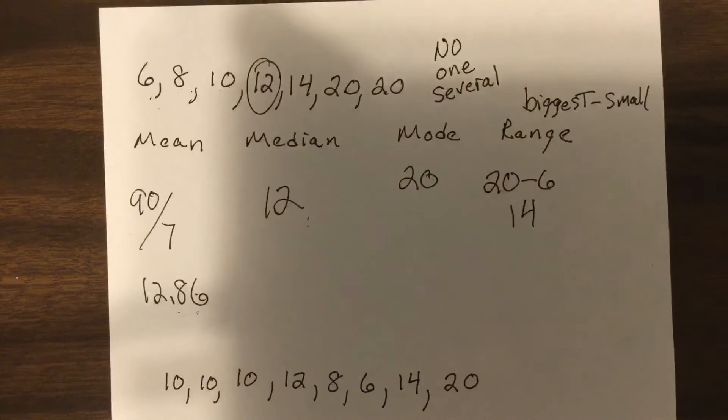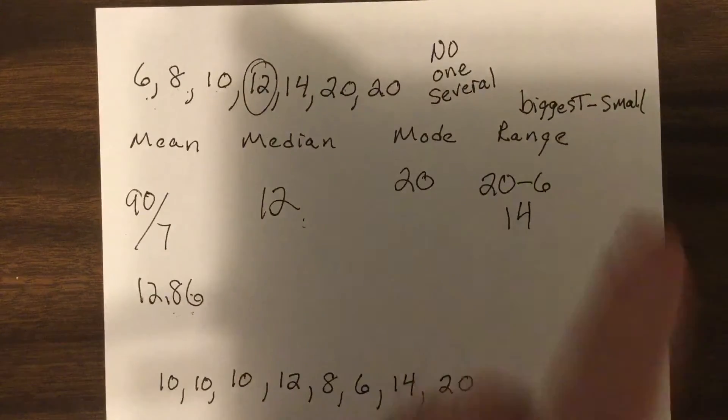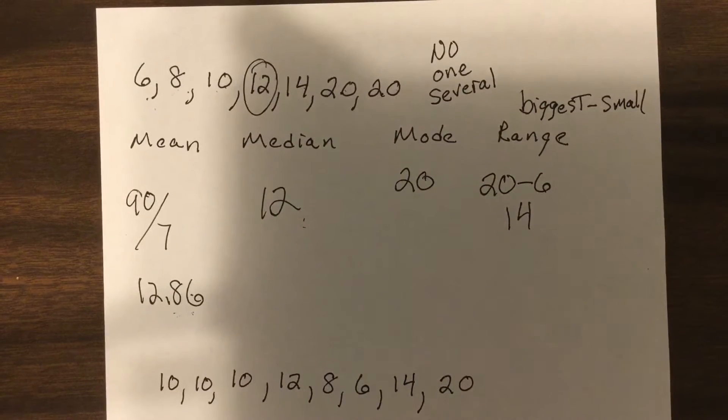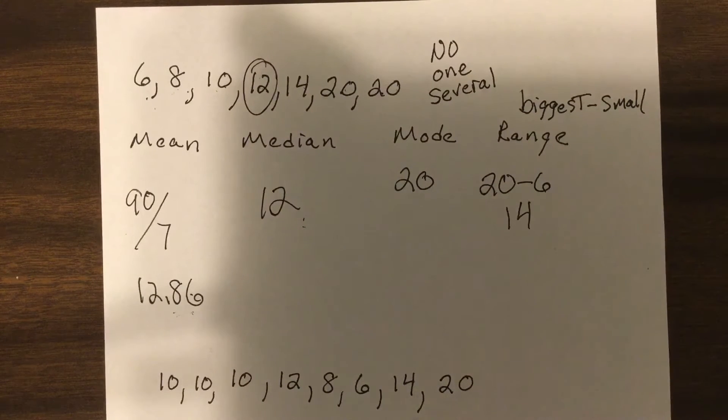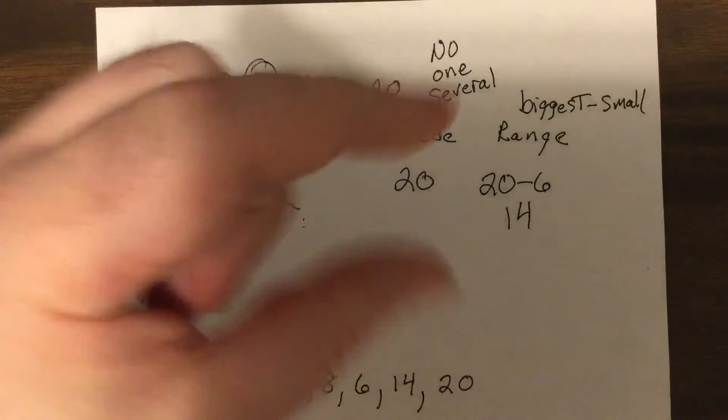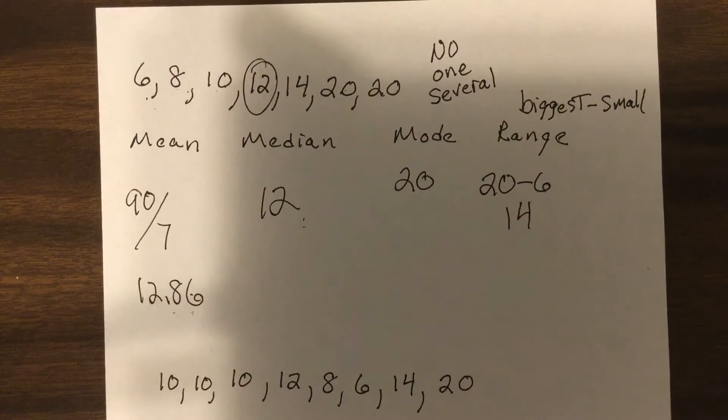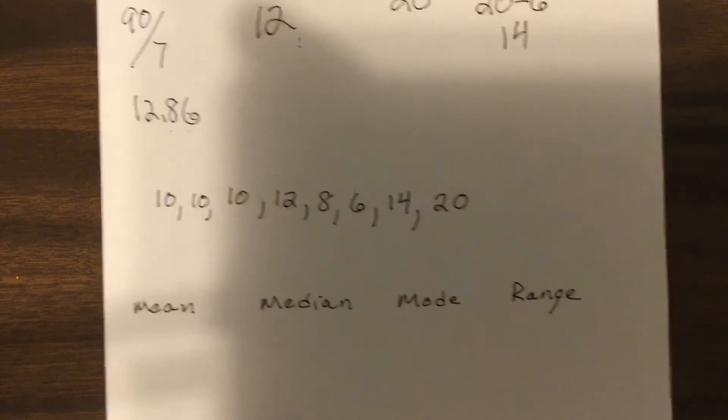So if I gave a test and did all these numbers to find out what represented the grade, and the range was like 4, that means wow, all the scores are really close together. Now this one, the next one.